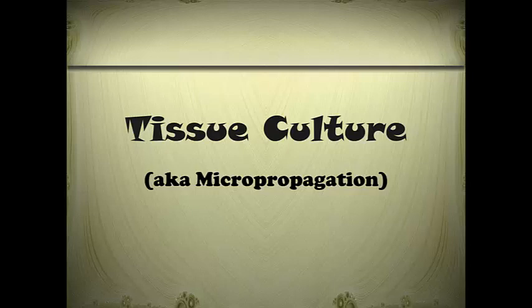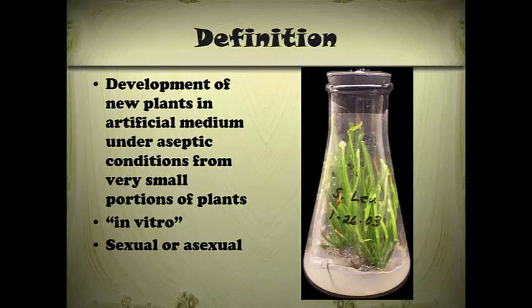So, what is tissue culture? Tissue culture or micropropagation is defined as the development of new plants in an artificial medium under aseptic conditions from very small portions of plants. Usually we use the term micropropagation if we're doing this purely for the purpose of propagation. In some cases, we will use this as a stepping stone to do other things to plants, and that's when you hear the term tissue culture more frequently used.